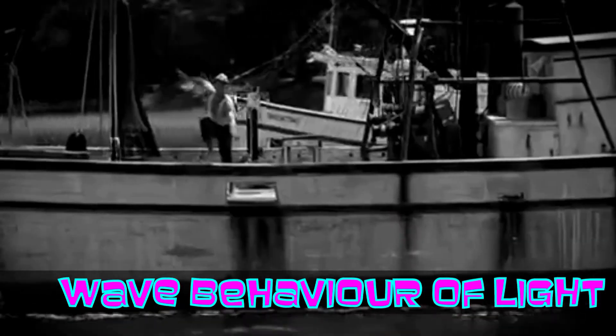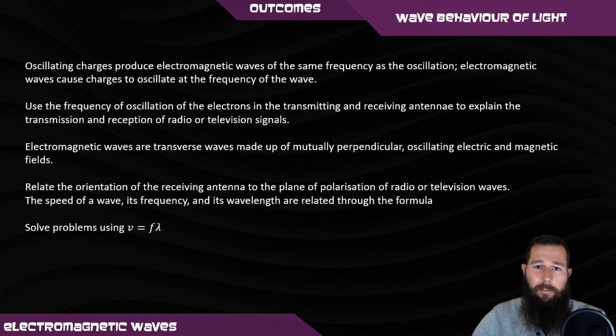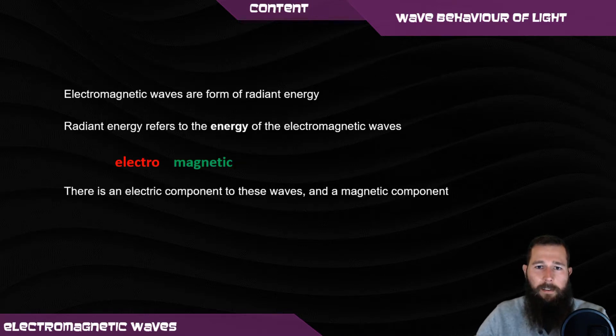Electromagnetic waves. The final topic of the course is light and matter, and in this video we'll be covering electromagnetic waves. Electromagnetic waves are a form of radiant energy and they have an electric component and a magnetic component, being electric and magnetic fields.